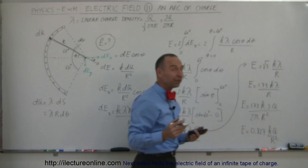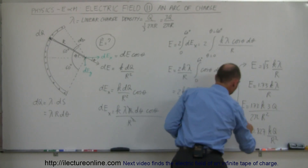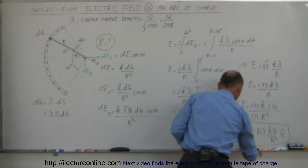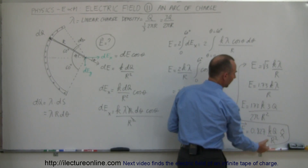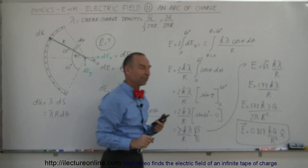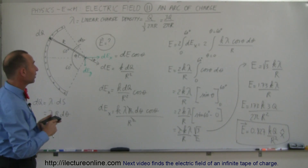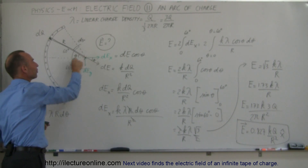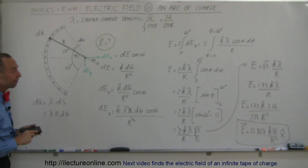That's probably the best form to leave it in. To turn it into a vector, notice the field points to the right, so we can write it as a vector with the unit vector in the x direction. This is in the typical format for electric field: KQ over R squared, where R squared is the distance squared to the point of interest, multiplied by the constant 0.827. This is the electric field due to an arc of charge, with the point of interest at the center of that arc. If it's not at the center, it becomes a much more difficult problem for a different video.